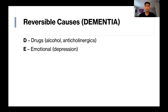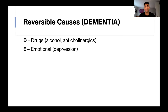Next, E is for emotional — specifically depression. This generally occurs with very severe cases of depression, and sometimes it's even referred to as pseudodementia. Basically the patient is so impaired from the depression and so slowed down that symptomatically they appear to have cognitive decline, but really the depression is the underlying cause.